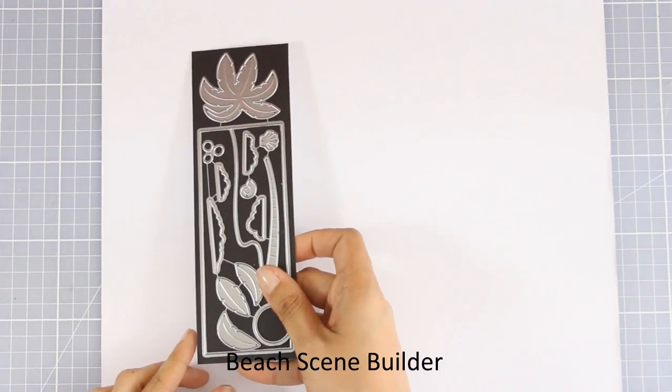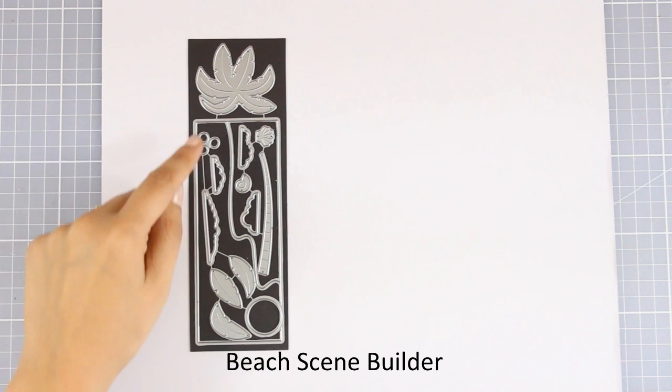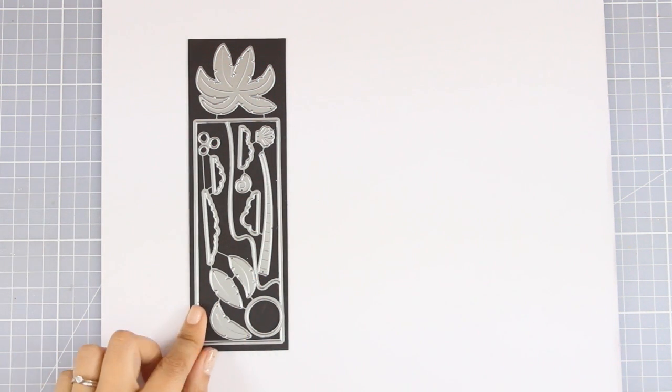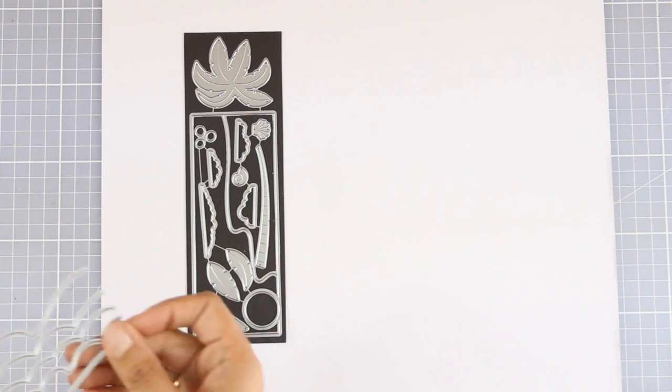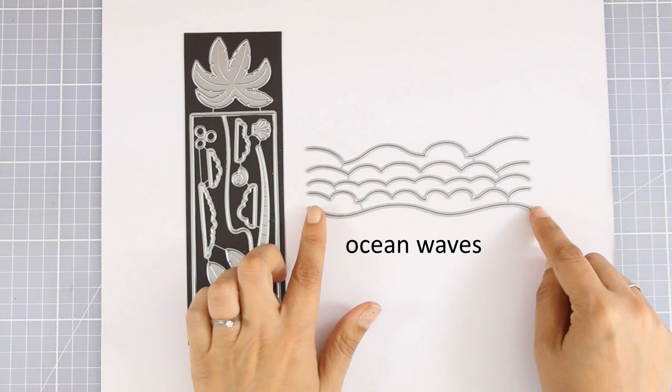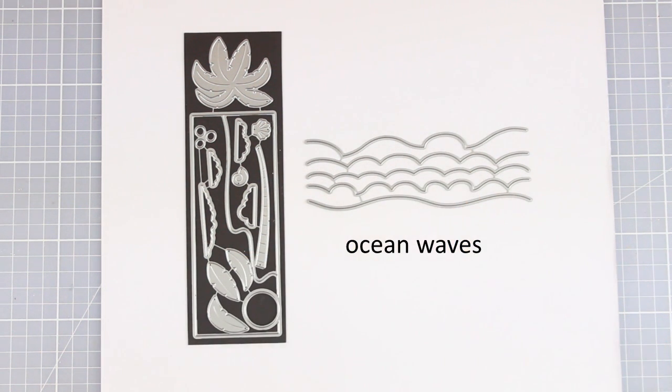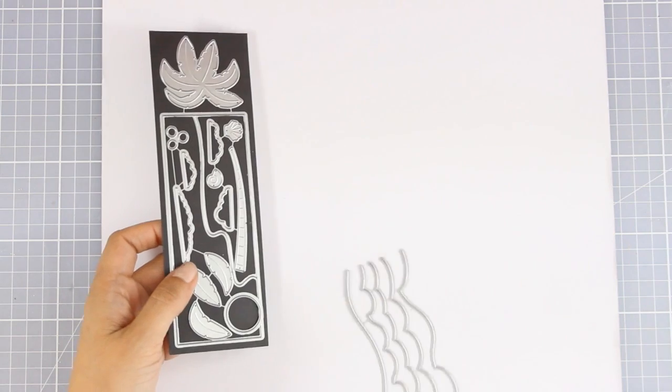And now let's move on to some of the die-namics sets that have been released this month. This is called Beach Scene Builder - gives you dies to cut out a palm tree as well as the beach and the sand and the sea, and you'll see tomorrow how I'm going to use that. Another great die set is Ocean Waves. It gives you five different waves and dies to cut out your waves, and I know that I will be using that a lot.